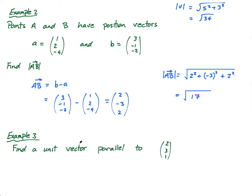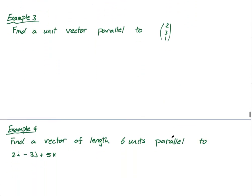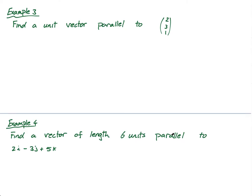Find a unit vector parallel to (2, 3, 1). So what's a unit vector? A unit vector, quite simply, is a vector of length 1 — a magnitude of 1. We need a vector that has a magnitude of 1.